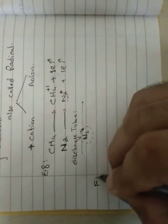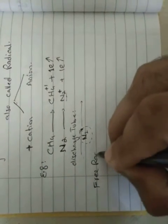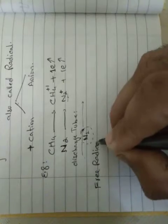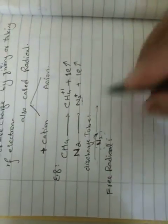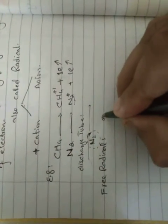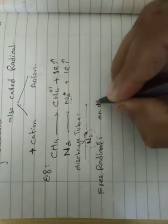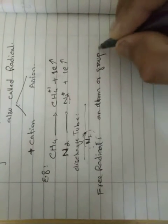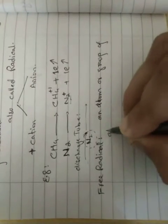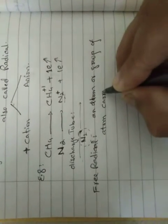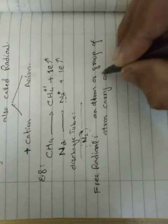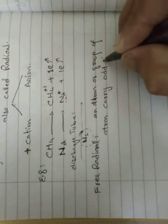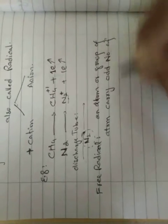Free radical - an atom or group of atom carry odd number of electron.